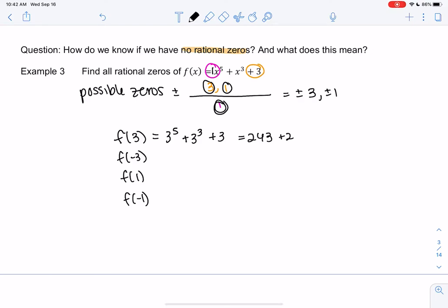But if you wanted to check, we get plus 27, plus 3, so 273 I think. Whatever it is, it's clearly not 0 if we just keep adding numbers. Let's try negative 3. So negative 3 to the 5th would just be negative 243, minus 27, plus 3. This is clearly not 0, but it ends up being negative 267, not 0.